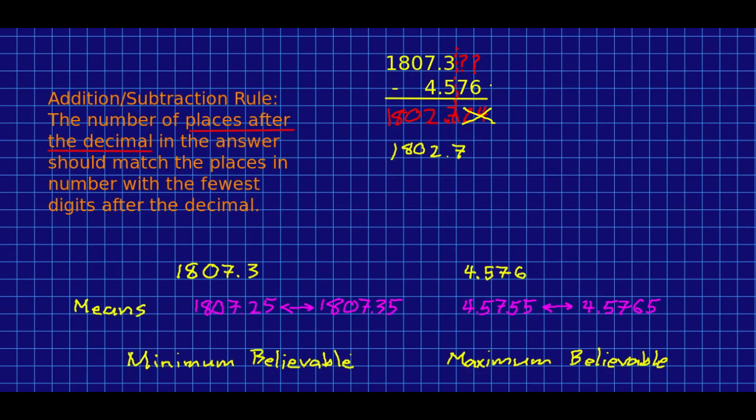We can justify this rule. I've already given you a brief justification, but here's another one. Think about these two numbers, 1807.3 and 4.576. If we don't actually know uncertainties in them, then our naive interpretation means that 1807.3 is actually some number between perhaps 1807.25 and 1807.35. And this 4.576 is really supposed to be a number somewhere between 4.5755 and 4.5765. So these are the ranges that we believe these numbers might actually lie in.